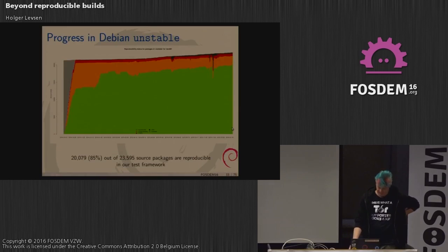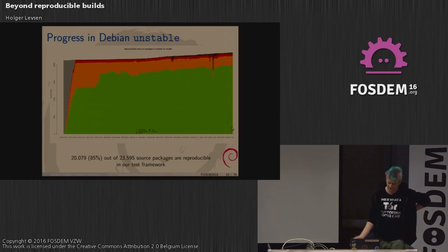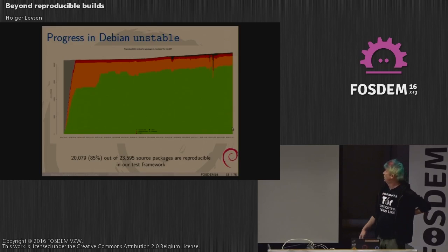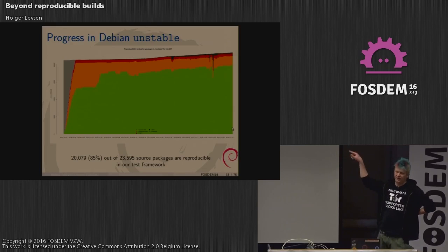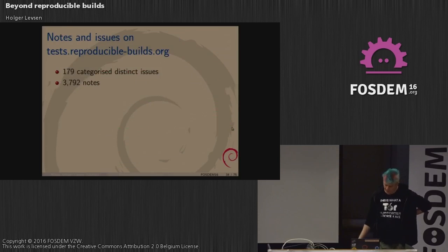Since yesterday, we reached 20,000 reproducible packages in unstable in our current test framework. The orange graph shows unreproducible packages, the red ones are failing to build from source, the black ones are not for AMD64 or have unavailable dependencies, and the green ones are of course the reproducible ones.